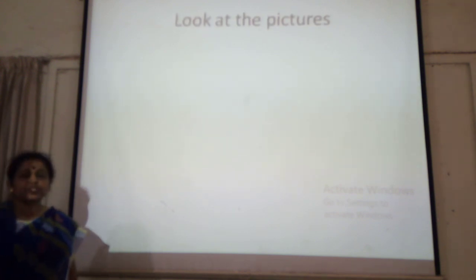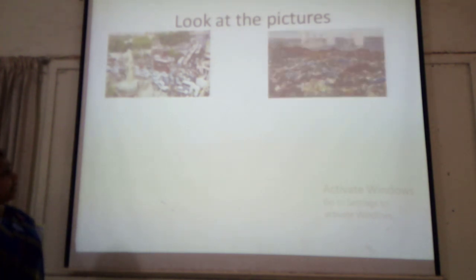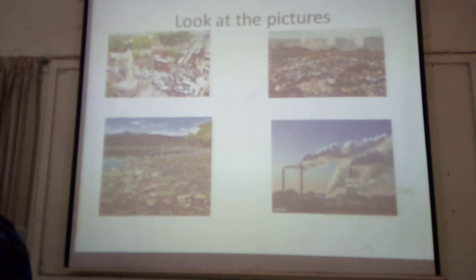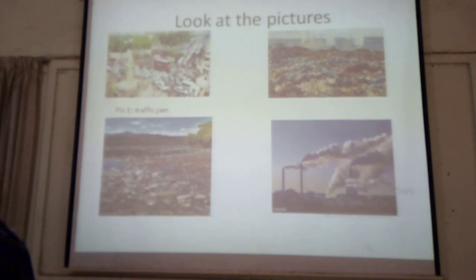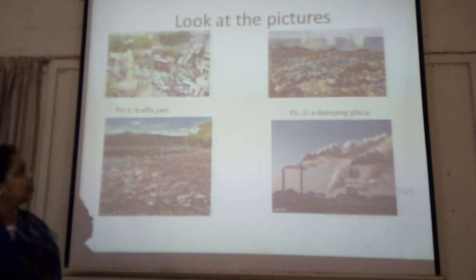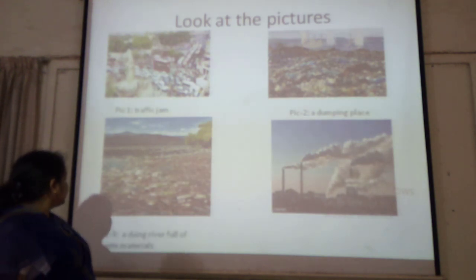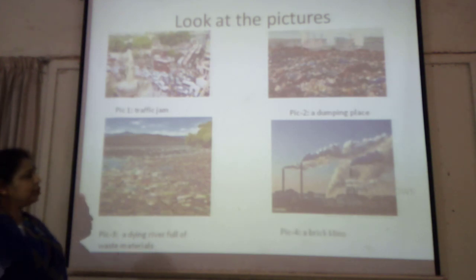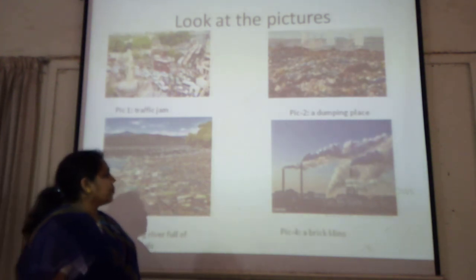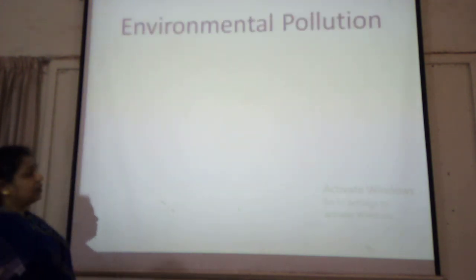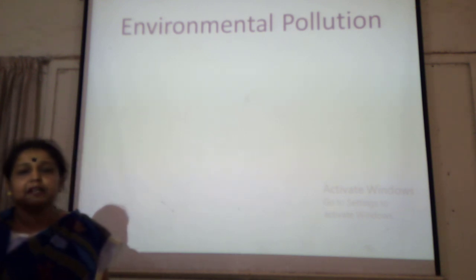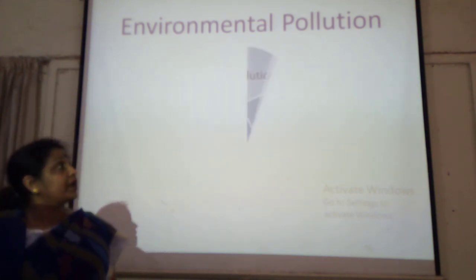Now dear students, look at the pictures and try to guess what the pictures signify. In our first picture, we see a traffic jam. In the second picture, we see a dumping place. In the third picture, we see a dying river full of waste materials. And the fourth picture shows if it cleans, fire and smoke comes. So can you guess our today's lesson? Our today's lesson is about environmental pollution.